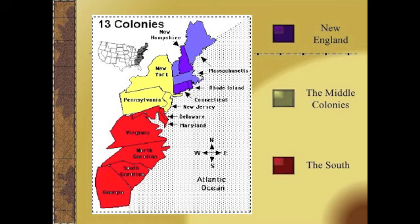The American colonies consisted of four distinct regions: New England, the middle colonies — sometimes called the Mid-Atlantic colonies — and the South. There was also something called the backcountry that ran through all three regions and encompassed the Appalachian Mountains. Each colonial region varied in geography, climate, and the ethnic makeup of the people who lived there.